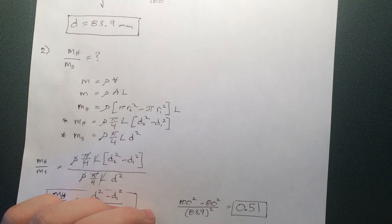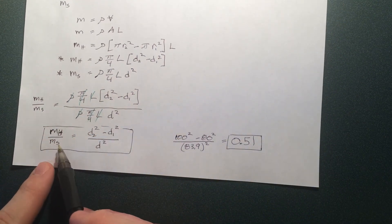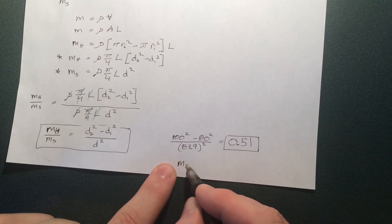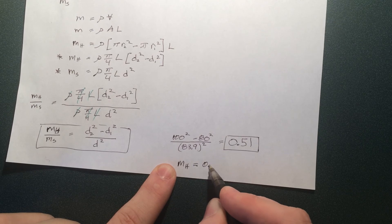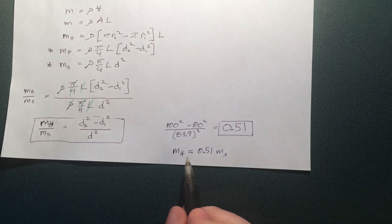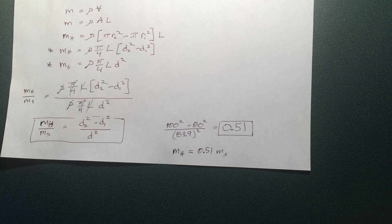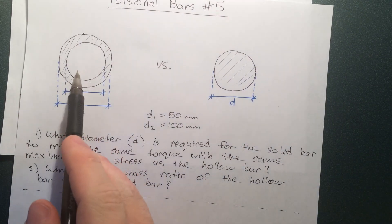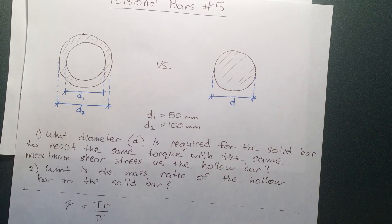The result is 0.51. So m_H over m_S equals 0.51, which means the hollow bar is only 51% of the mass of the solid bar — it's roughly twice as mass-efficient. Basically, this hollow bar can do the same job as the solid one with only half the mass. That's some huge savings.